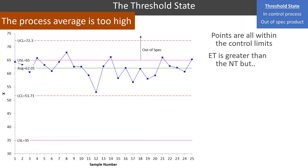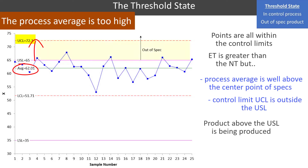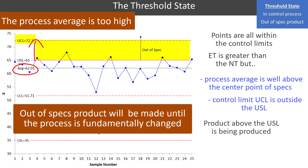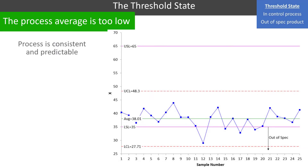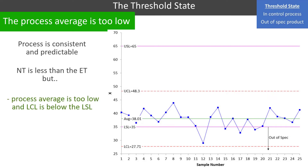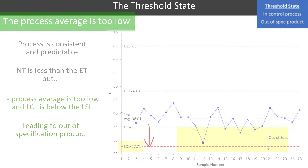All the points are within the control limits, and the engineering tolerance is greater than the natural tolerance. But the problem is the process average is well above the center point of the spec — our control limits are actually outside the specification limits, and we have product being produced above the upper spec limit. That out-of-spec product will continue until the process is fundamentally changed. Here's the opposite effect, where the process average is too low. The nice thing about the individuals chart is that we can put specifications and control limits on the same chart, as shown here. The lower control limit is below the lower spec limit, and again you're going to be making out-of-spec products.